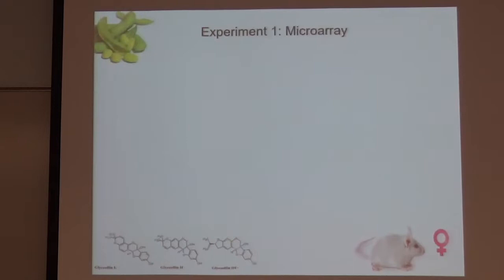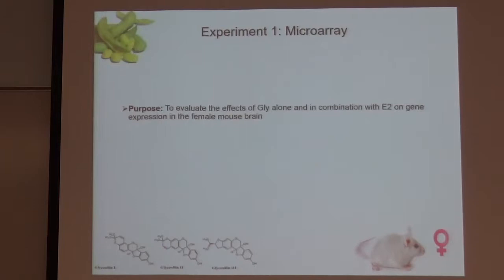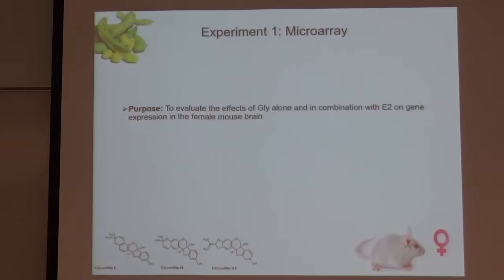The big picture of my entire project was to evaluate the effect of glyceolin by itself or in combination with estrogen on gene expression in the female mouse brain. We focused on female mice because we were looking at estrogen receptor-mediated effects. Men do have estrogen too — testosterone is converted to estrogen in the brain — but we used female mice predominantly. All injections were done intraperitoneally, so we were looking at effects of the compound and estrogen crossing the blood-brain barrier.